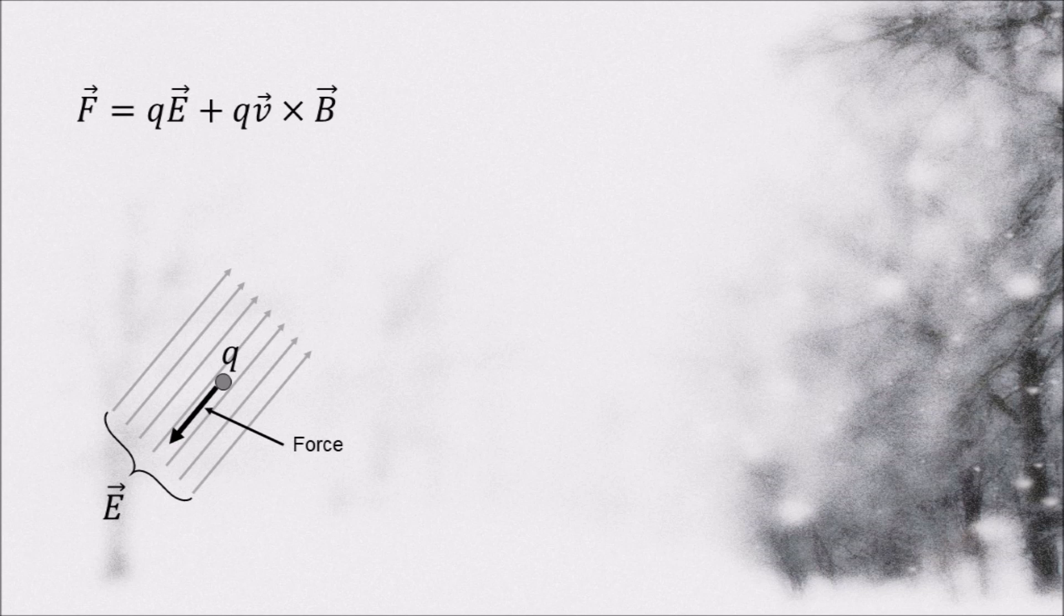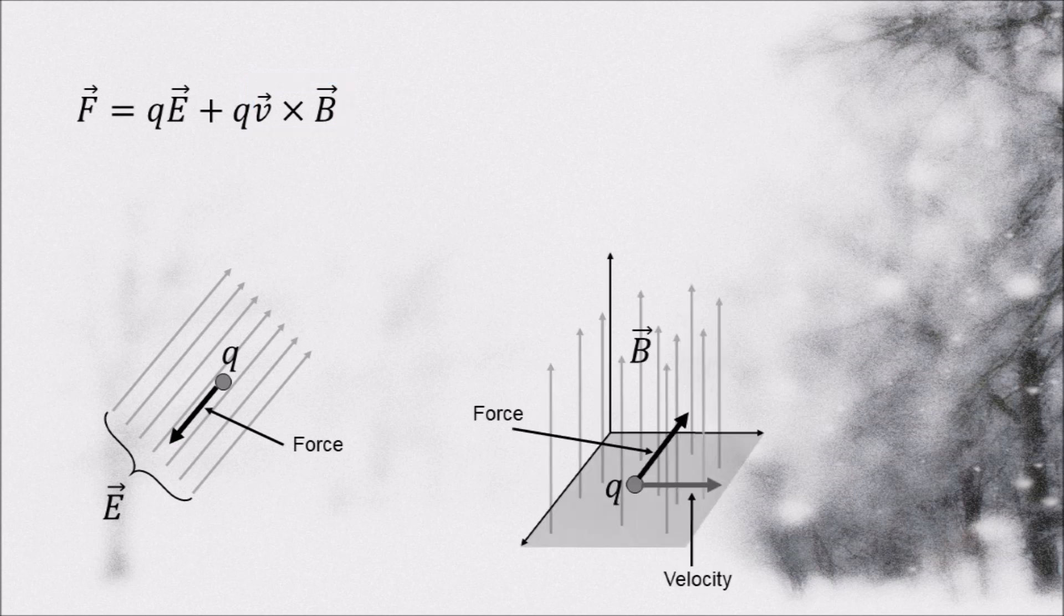In the second term we have two vectors, the velocity of the electron and the magnetic field. The cross product here tells us that the force is perpendicular to both vectors.